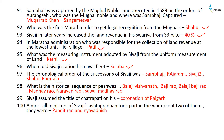Sambhaji was captured by Mughal noble Mukarrab Khan in Sangameshwar and executed in 1689 on orders of Aurangzeb. The first Maratha ruler to get legal recognition from the Mughals was Shahu. Shivaji in later years increased the land revenue in Swaraj from 33% to 40%. In Maratha administration, the Patel was responsible for the collection of land revenue at the village level. The measuring instrument adopted by Shivaji for uniform measurement of land was the Kathi. Shivaji stationed his naval fleet at Kolaba.